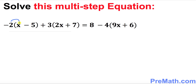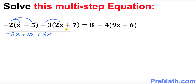So negative 2 times X becomes negative 2X, and then negative 2 times negative 5 becomes positive 10. Likewise, over here that's going to be positive 6X.